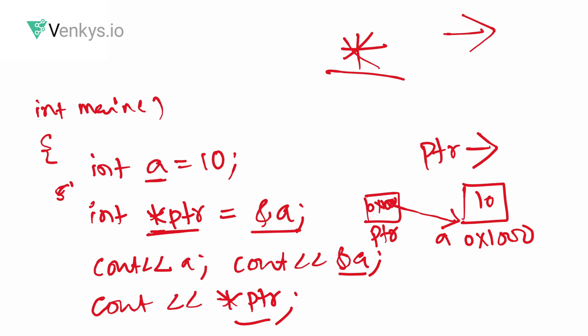A correction: when you say &a you get address 0x1000, and when you say *ptr you get the value 10 — not 1000. Only when you print ptr directly do you get the address 0x1000. So to clarify: a and *ptr print the same value (10), and &a and ptr print the same address (0x1000). Dereferencing prints the value at the stored address.